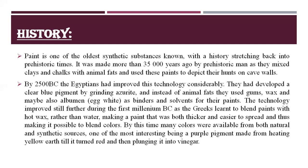The technology improved still further during the first millennium, as the Greeks learned to blend paints with hot wax rather than water, making a paint that was both thicker and easier to spread, and thus making it possible to blend colors. By this time, many colors were available from both natural and synthetic sources, one of the most interesting being a purple pigment made from heating yellow earth until it turned red, then plunging it into vinegar.